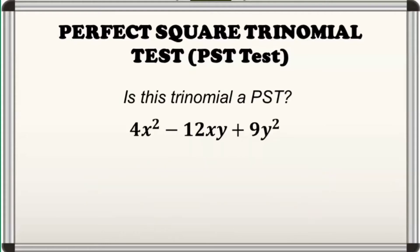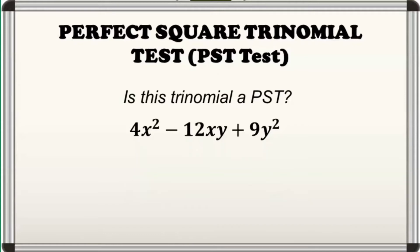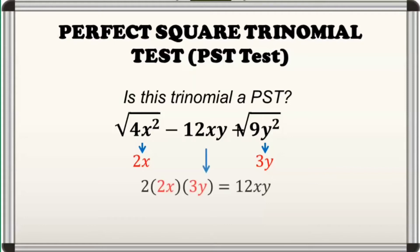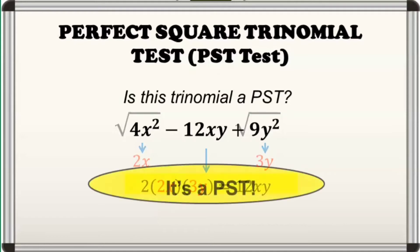Alright, let's have the second example. Is the given a PST? We will apply the PST test. The first and last terms are perfect squares since 4x squared is equal to the square of 2x and 9y squared is equal to the square of 3y, and both are positive. Done na tayo sa first requirement. Taking the square roots of the first and last terms, we have 2x and 3y respectively. Afterwards, we take twice their product so we have 2 times 2x times 3y which is equal to 12xy. We do not mind their signs. Done na tayo sa second requirement. Kaya, masasabi natin na ang given ay isang PST.